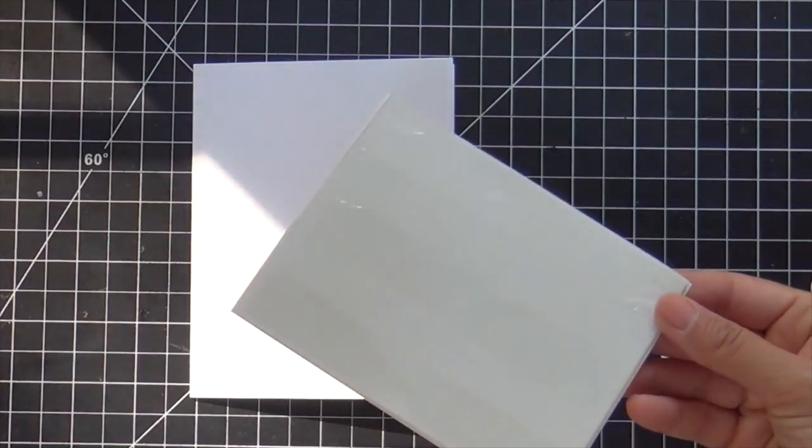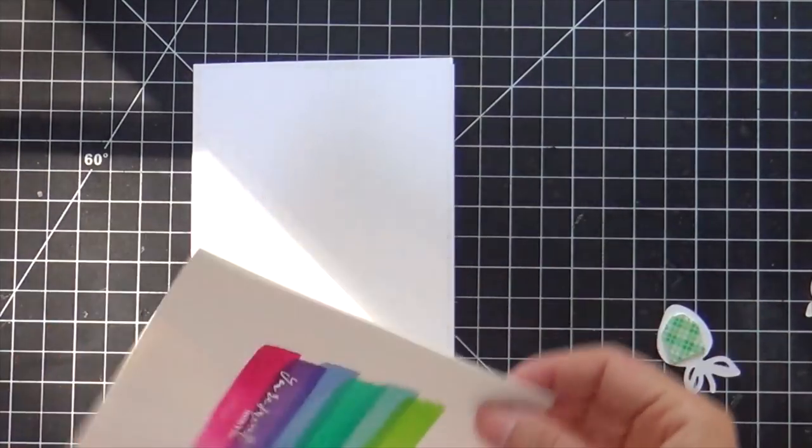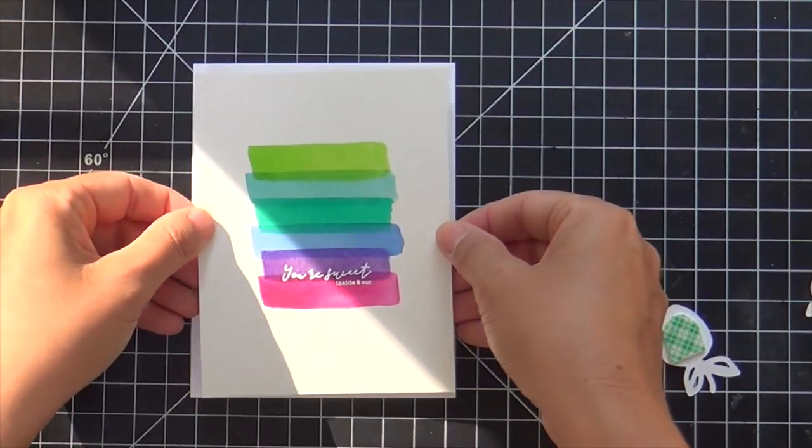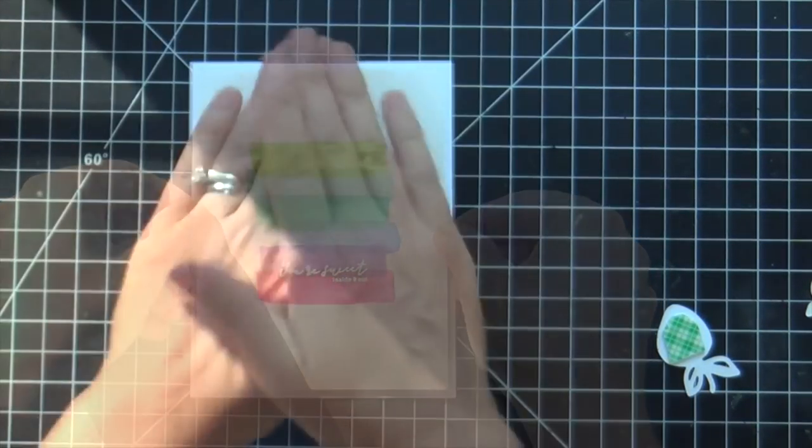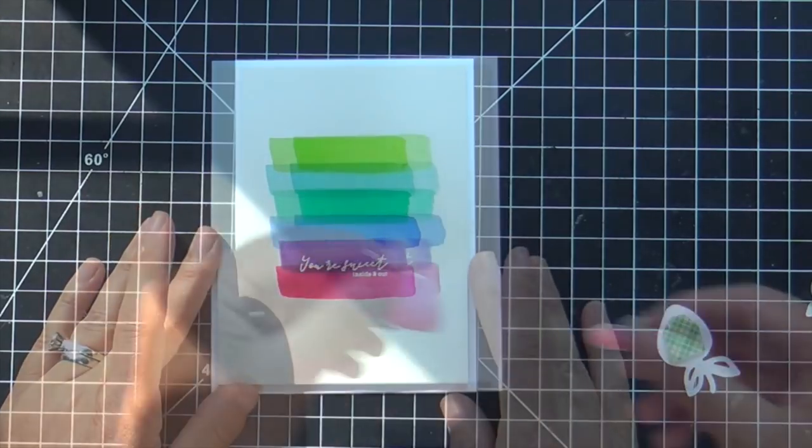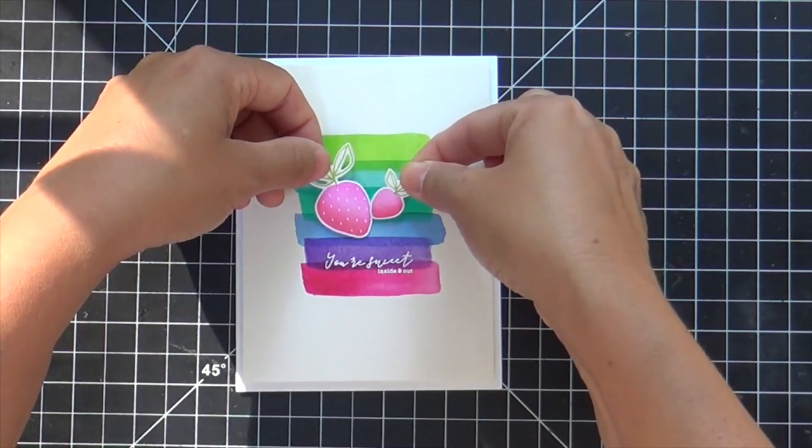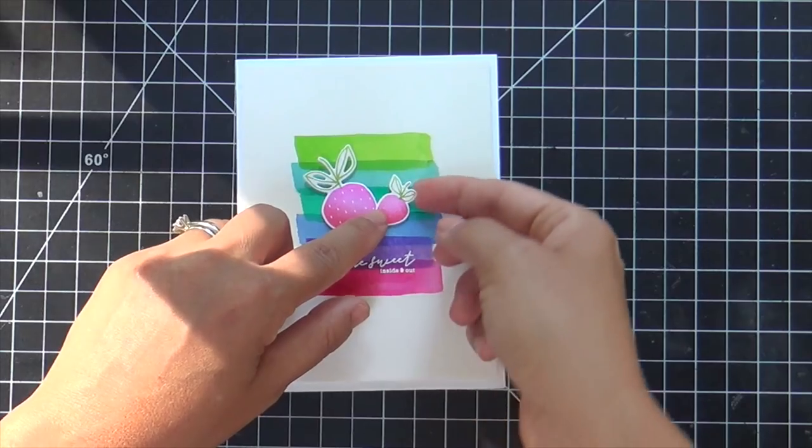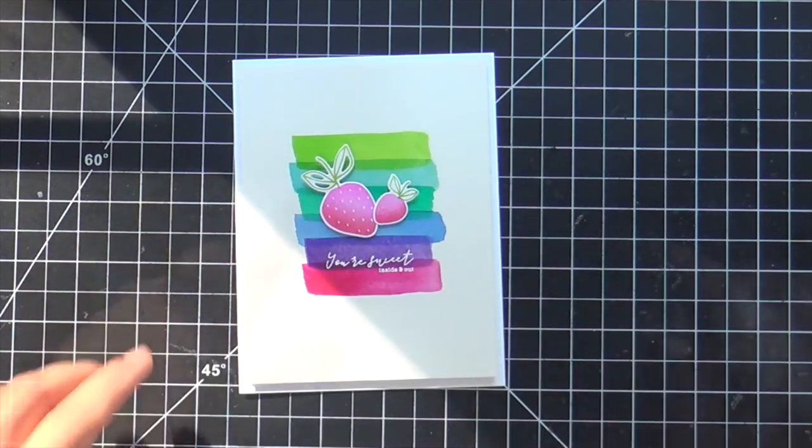I cut down some foam sheeting to put on the back of this watercolor panel. I adhered the foam sheeting with score tape. And then as well, I put a little bit of foam tape on the back of the strawberries to pop those up. And this card is finished.